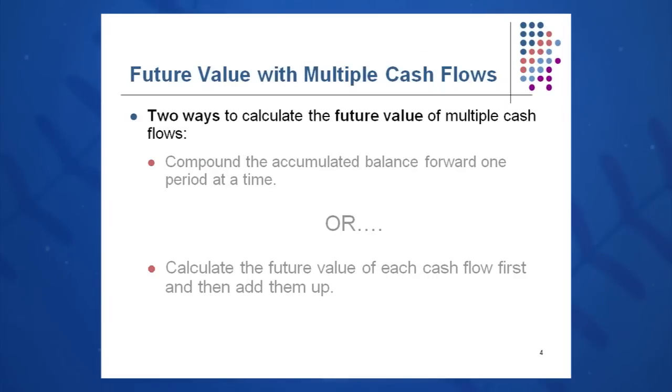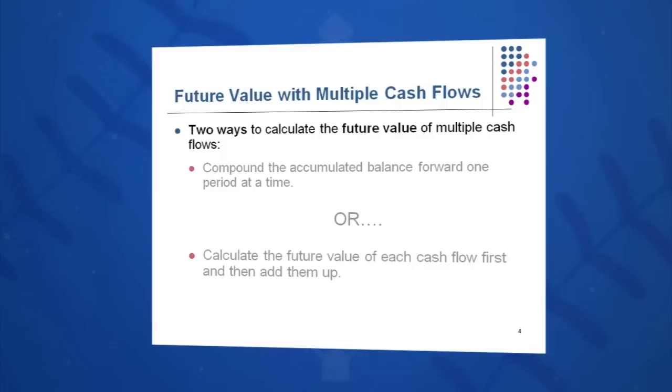Let's take on future values with multiple cash flows. Objective number one first. I can calculate these in two different ways to calculate these future values. Again, I'm compounding out to the right and I may have a bunch of cash flows that are different. For instance, I compound each balance one period forward at a time or I can calculate the future value of each cash flow and then add them up. And I prefer method number two, but you can certainly use either method and you should come up with the same answer.